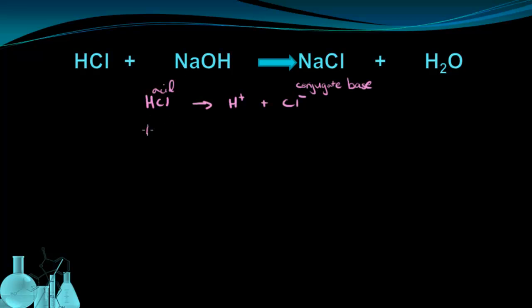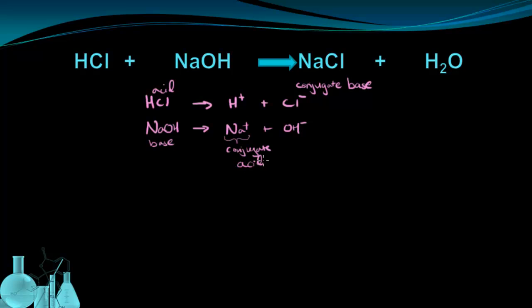We can do the same thing for NaOH, which is our base. It dissociates in solution into Na⁺ ions and hydroxide ions. It's the Na⁺ ion that's the conjugate, and since this conjugate came from the base, it's a conjugate acid. Now let's think about the key idea: the stronger an acid or base is, the weaker the conjugate will be. HCl is a very strong acid and NaOH is a very strong base, so these conjugates are going to be very, very weak.